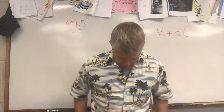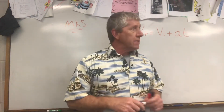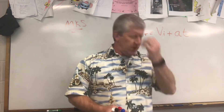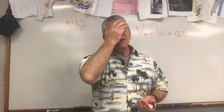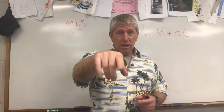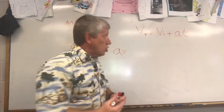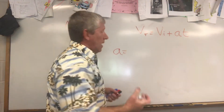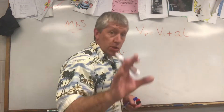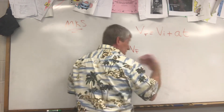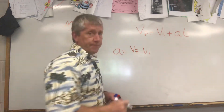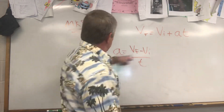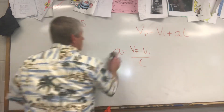How do you get the change in anything? You subtract. For example, if the temperature was 57 degrees last week and 72 degrees today, the change is 72 minus 57, which is 15. Similarly, change in velocity is final velocity minus initial velocity, all divided by time. Rearranging that equation gives you the first Big Three: Vf = Vi + at. That first equation is derived directly from the acceleration equation.